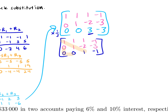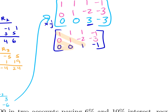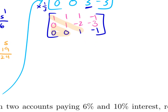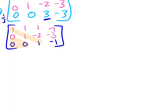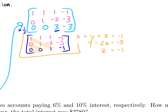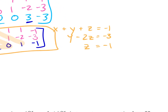The new third row becomes: zero, zero, one, negative one. The first two rows stay the same. Now we have the diagonal of ones and zeros underneath, so we can plug back into our system of equations. Our first equation is x plus y plus z equals negative one. The second equation is y minus two z equals negative three. The third equation is z equals negative one.